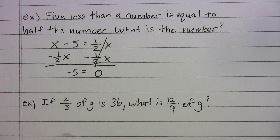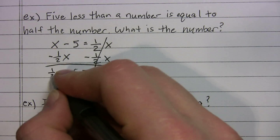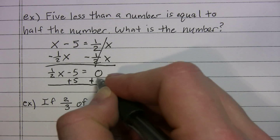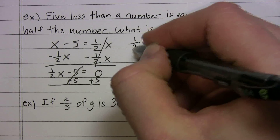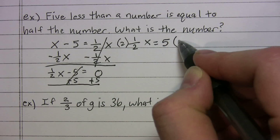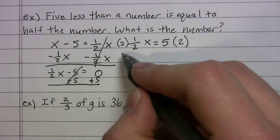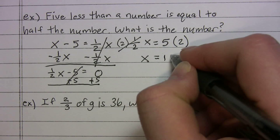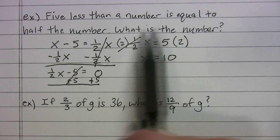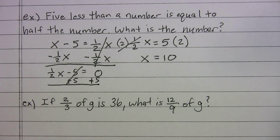We subtract (1/2)X from both sides, giving us (1/2)X minus 5 = 0, then we swing the 5 over: (1/2)X = 5. To get rid of the 1/2, multiply both sides by 2, so X = 10. We can check: five less than 10 is 5, and half of 10 is also 5. It works out.